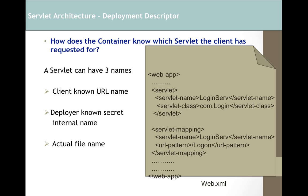Now let's say you get a request and your web container has, say, 10 servlets. You need to map the request URL to the correct servlet. For example, if you have a servlet class called 'login' and a user sends a request with URL 'logon,' you need to link that URL to the login servlet. To do this, and to tell the container which servlets exist, you use a file called web.xml, also known as the deployment descriptor.